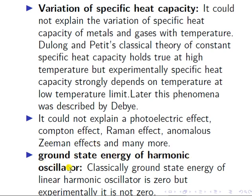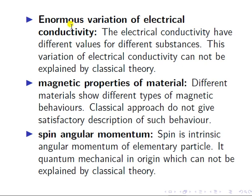Another inadequacy is the ground state energy of the harmonic oscillator. According to classical theory, the ground state energy of a harmonic oscillator is zero. But experimentally it is not zero — experimentally the ground state energy of a harmonic oscillator is equal to ℏω/2. Classically the ground state energy should be zero, but experimentally it is not zero. This is also a phenomenon not explained by classical theory; we need a quantum mechanical approach to describe it.